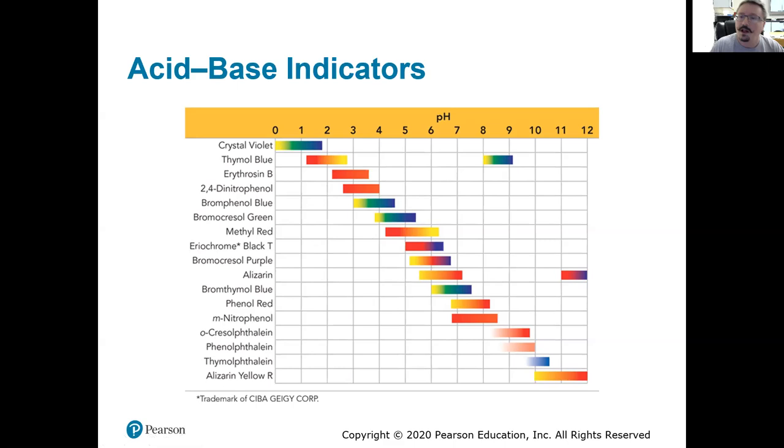Know how it works. If we tell you that the acidic form is blue and the basic form is red, and we say, hey, we've got an equal ratio between the two. Well, you mix blue, you mix red. What do you get? Purple. So you should be able to tell us what color do you expect to see in solution if the ratios are equal? Blue, red, purple, yellow, it'd be purple. So that's everything for indicators and pH meters.